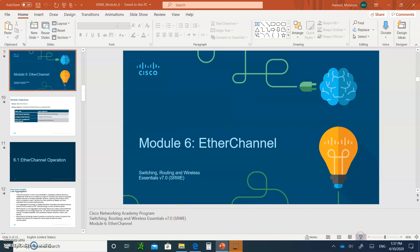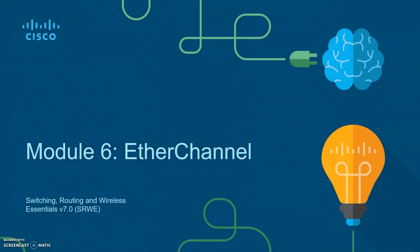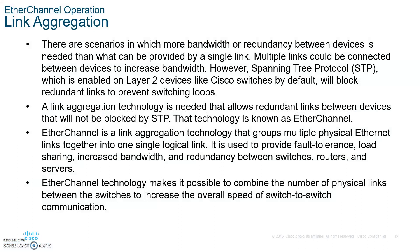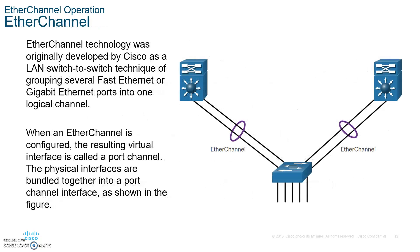Hello and welcome to module six: EtherChannel. Don't forget to write your notes and submit them when you're done. EtherChannel is used to aggregate multiple links to achieve higher bandwidth as a channel, while providing for tolerances via STP. EtherChannel can be used between switches, routers, and servers.